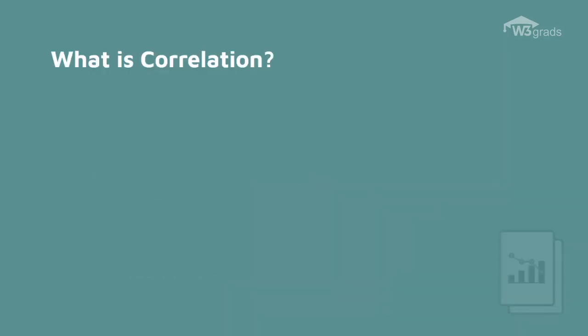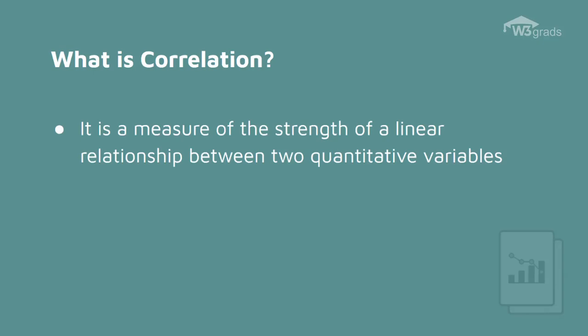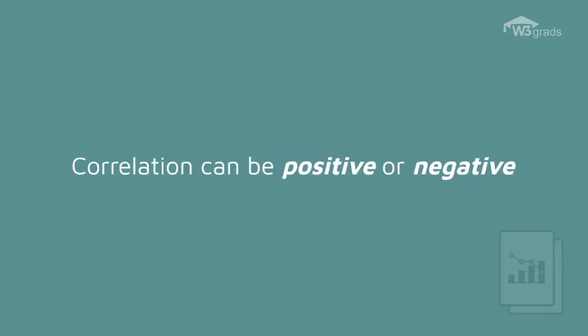Correlation is a term that is a measure of the strength of a linear relationship between two quantitative variables, for example, size, length, weight, etc. Correlation can be positive or negative.